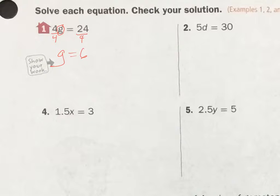I'm going to check my answer. 4 times 6 equals 24 — it checks out. It's all good.